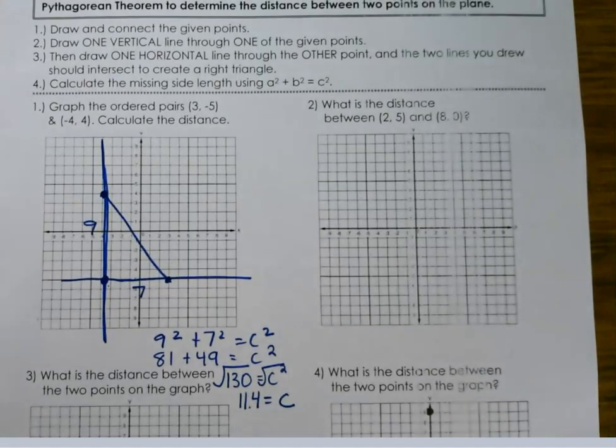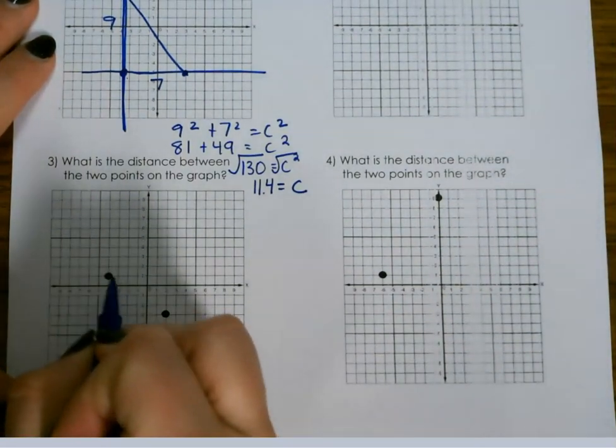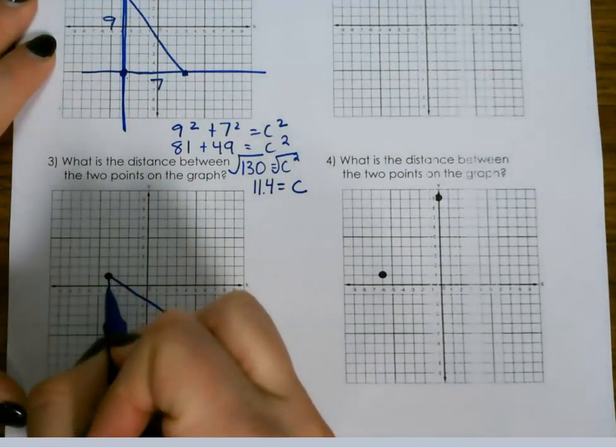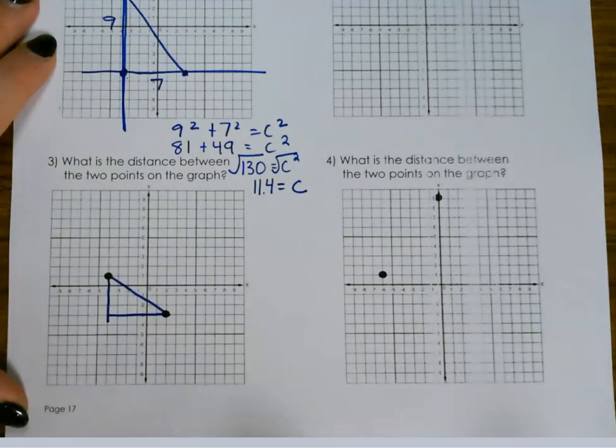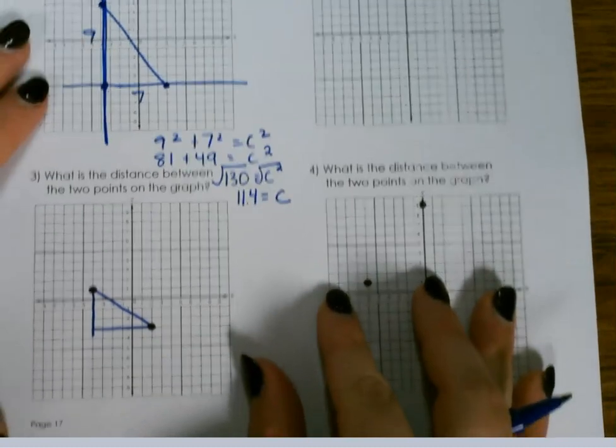For our next example, we have our points already drawn on the graph for us. So we're going to connect them. Then I'm going to do a vertical line and a horizontal line. I don't always do them where they continue like this once I get the hang of what I'm doing.